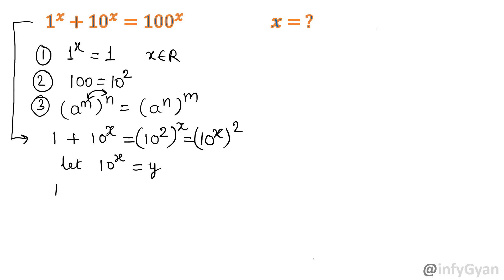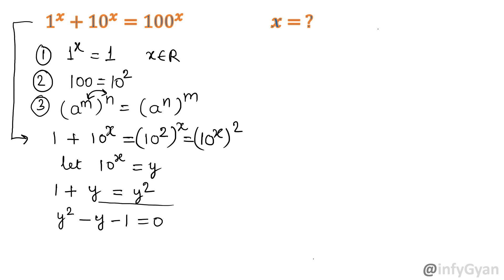The equation becomes 1 plus y equals y squared. In other words, y squared minus y minus 1 equals 0. This is a quadratic equation, so of course the quadratic formula will come into the picture.